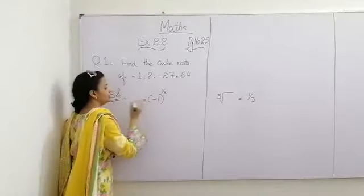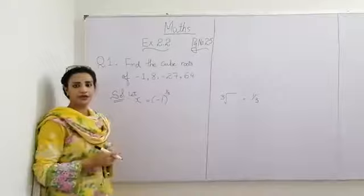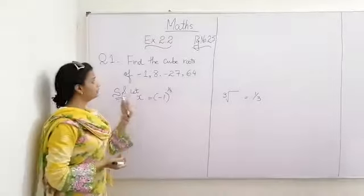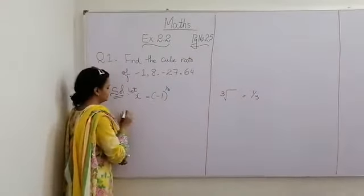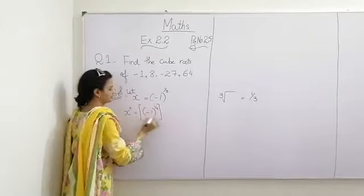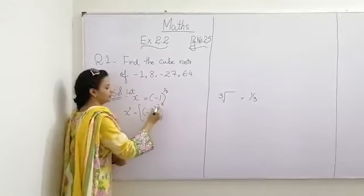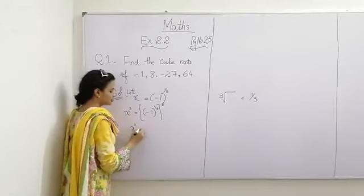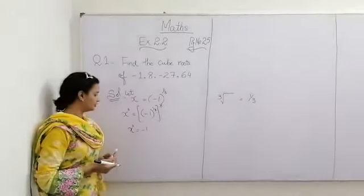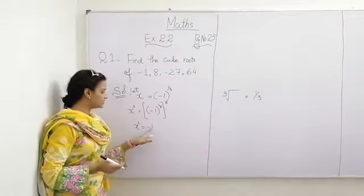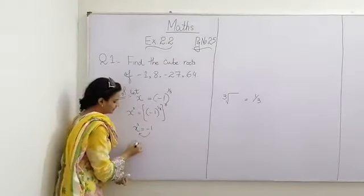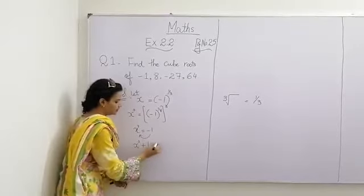And we suppose this value is equal to x. Next step — how can we solve this question? Because we find the value of cube root, so by taking the cube on both sides, this cube cancels with 1 over 3. So x cube is equal to minus 1. Here on the right side we don't have the value of 0, we have the value minus 1. So if I change minus 1 the direction, it will change the sign also. So x cube plus 1 is equal to 0.